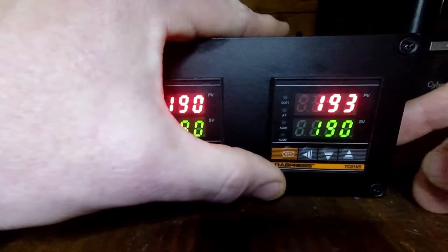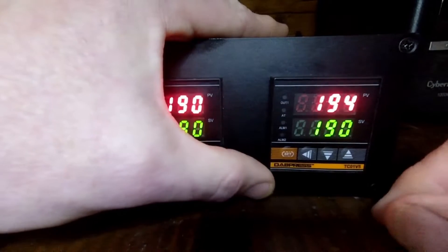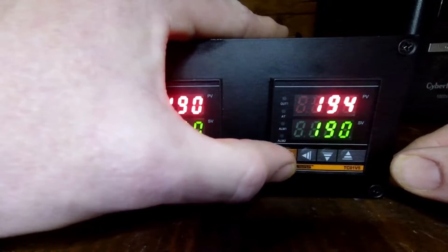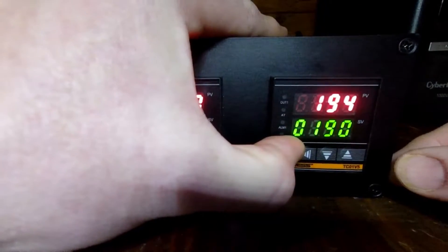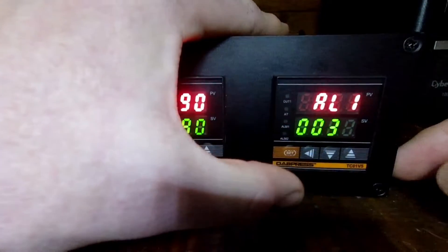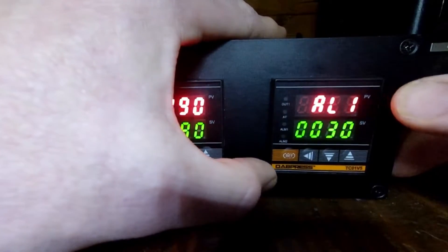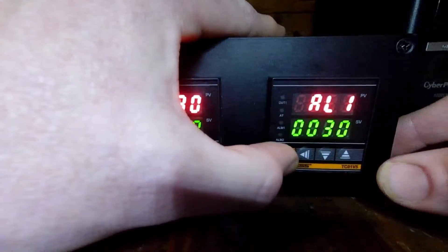So the first thing we want to do is press in and hold on the set button. It's the orange button on the left hand side of the PID module. You hold it in for about five seconds. Once you get to the AL1, you're now in the configuration menu.